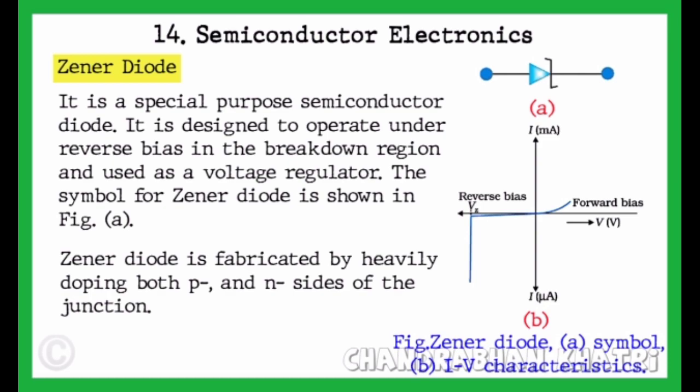The symbol of Zener Diode is shown in figure A. Zener Diode is fabricated by heavily doping both P and N sides of the junction.